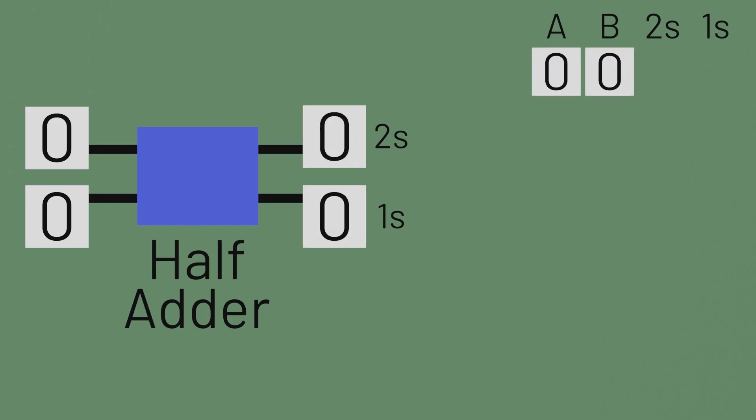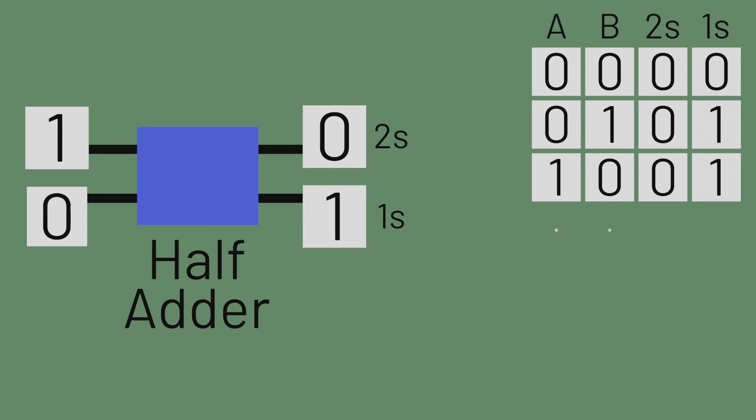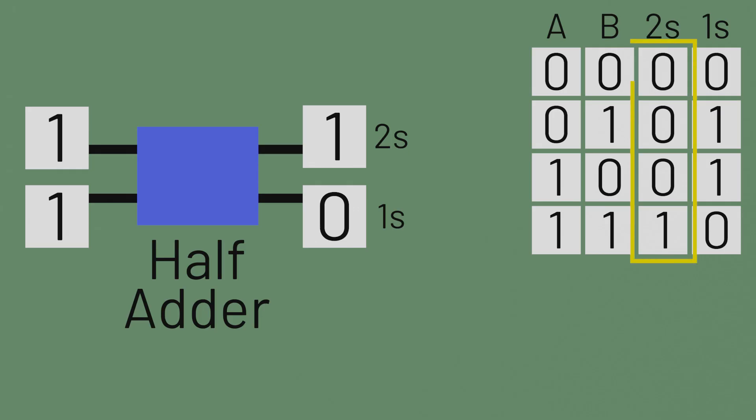Adding two zeros and the output is a zero. Adding a one and a zero, regardless of order, gives us a one. Adding two ones gives us two, represented by a one in the twos place and zero in the ones place. But notice the pattern here. The twos place output is a one, only if both inputs are ones. That sounds like an AND gate. And the ones place output is a one, if either input is a one, but not both. That sounds like an exclusive OR gate.